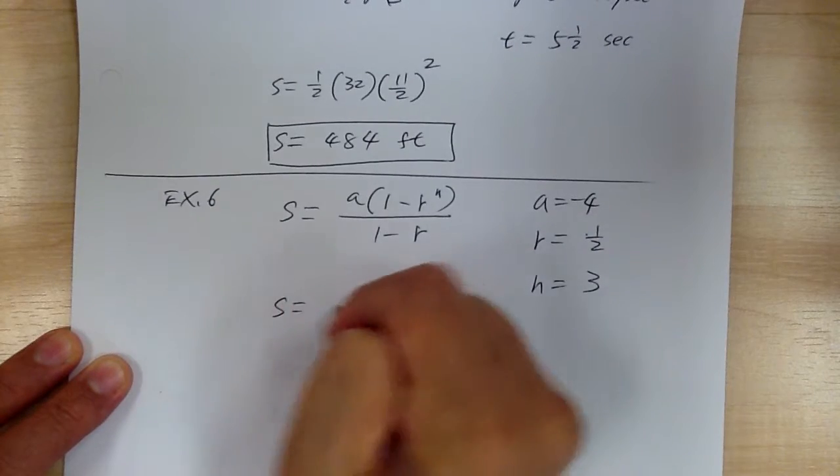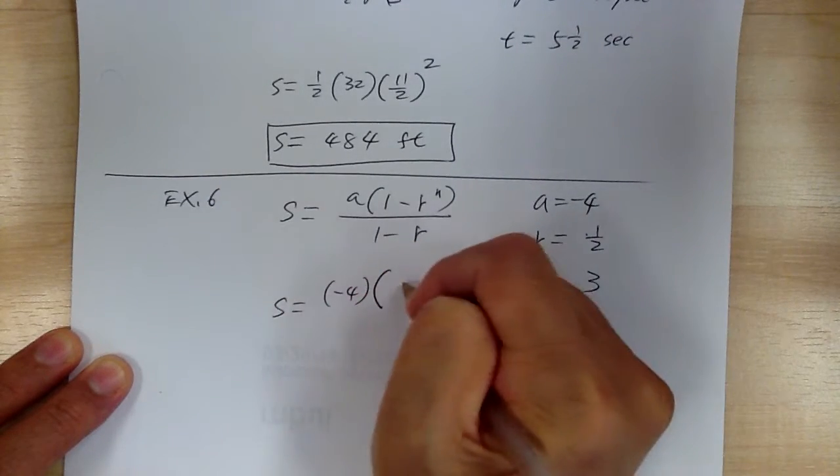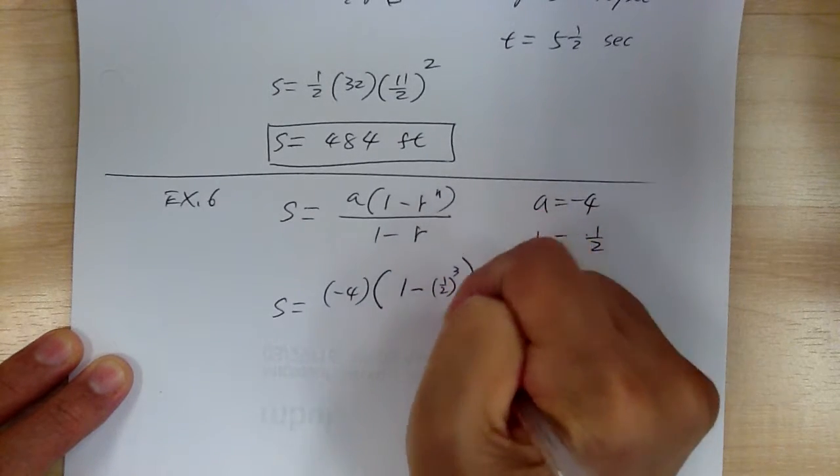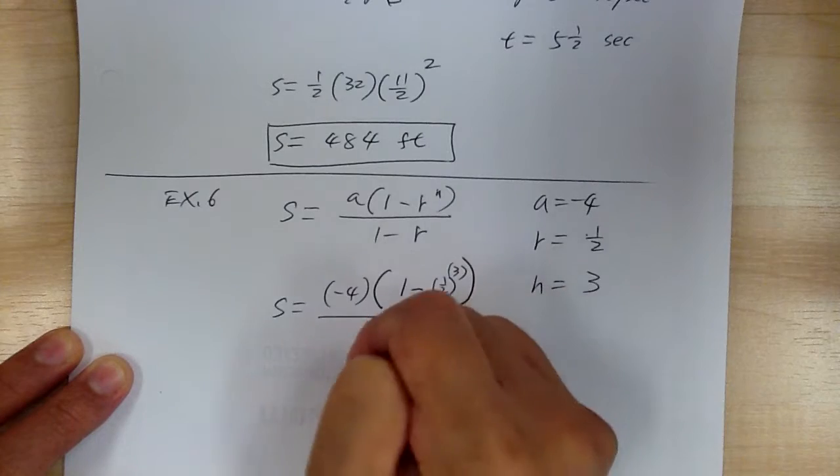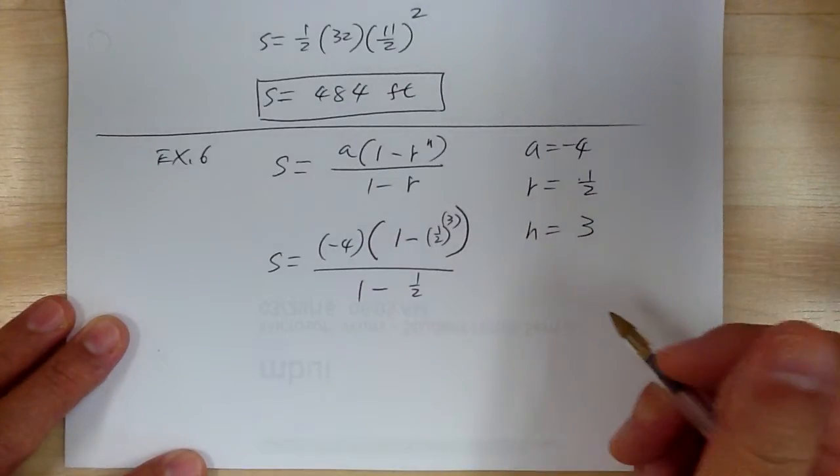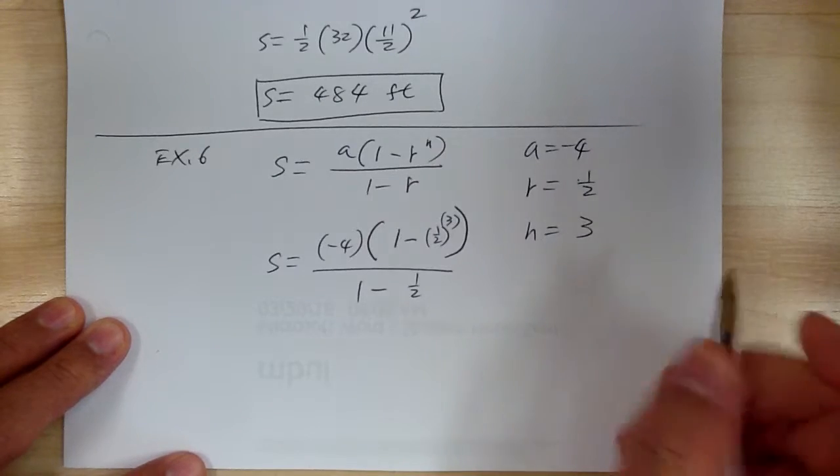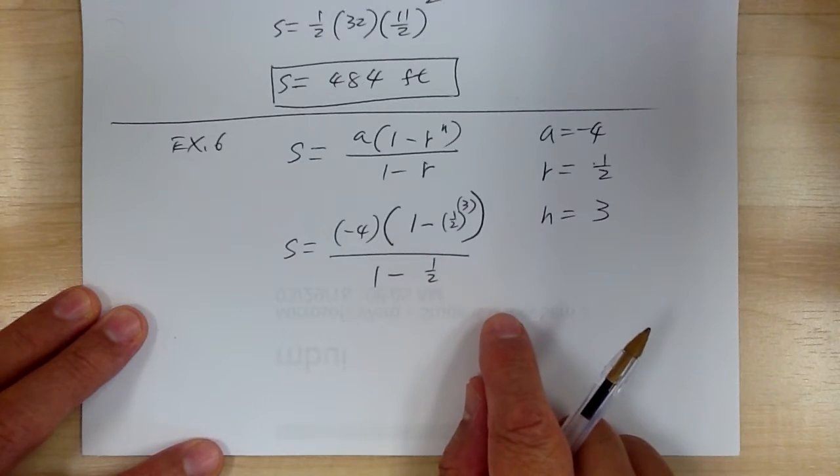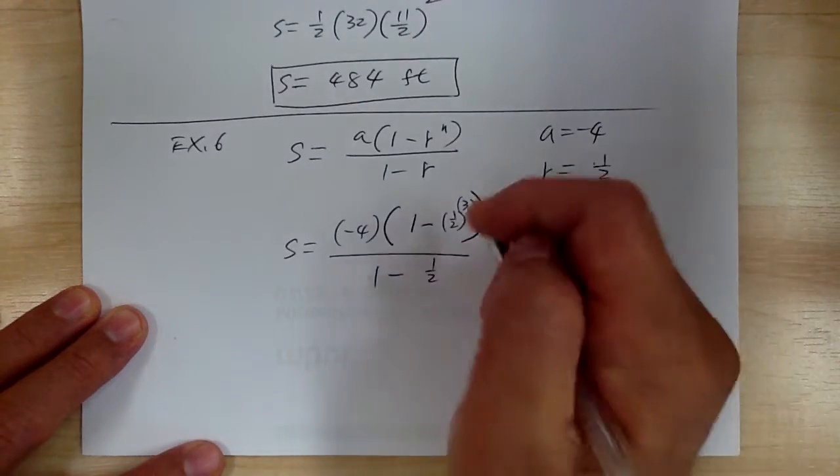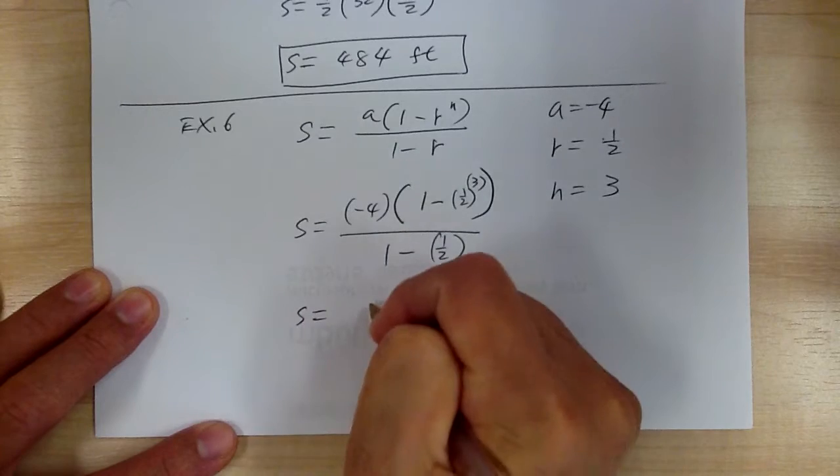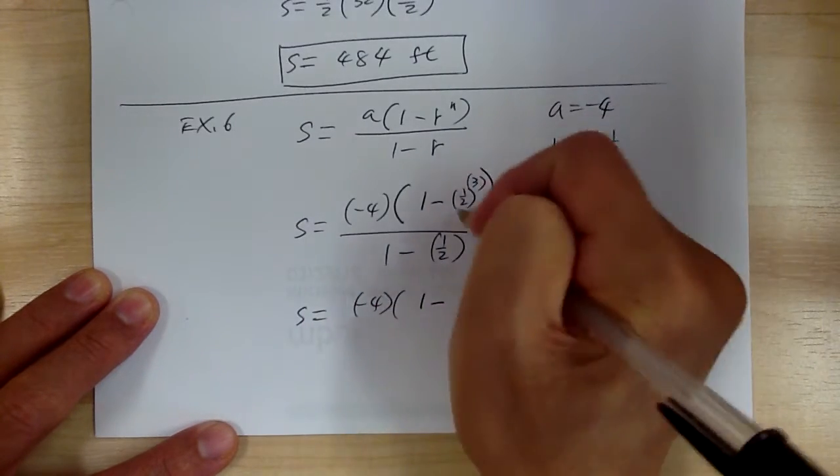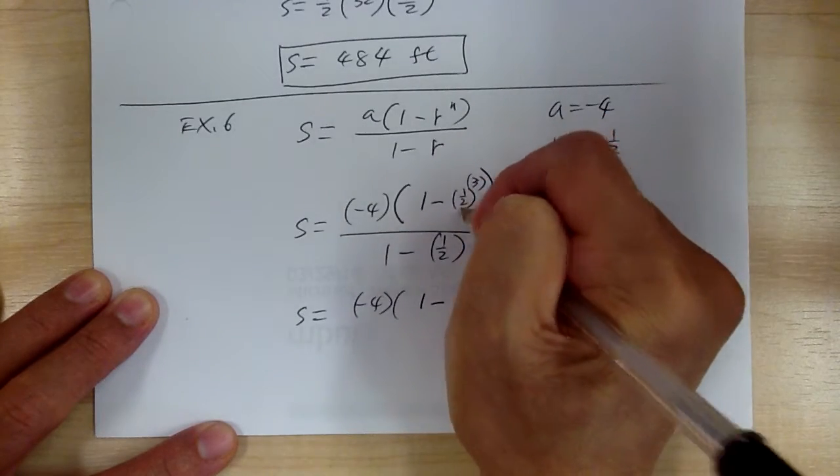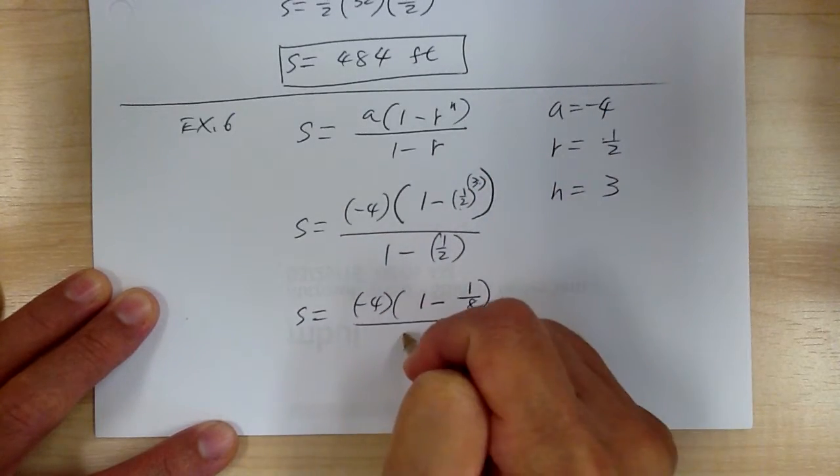So when you substitute, so A is negative 4. R is 1 half. N is 3. 1 minus R. So this is the formula to find sum of the geometric series. So you know this in algebra 2. So again, when you work it out. So you got negative 4 times 1 minus. So you work this part out. You get 1 over 8. 1 to the 3 power is 1. 2 to the 3 power is 8. 1 minus 1 half.